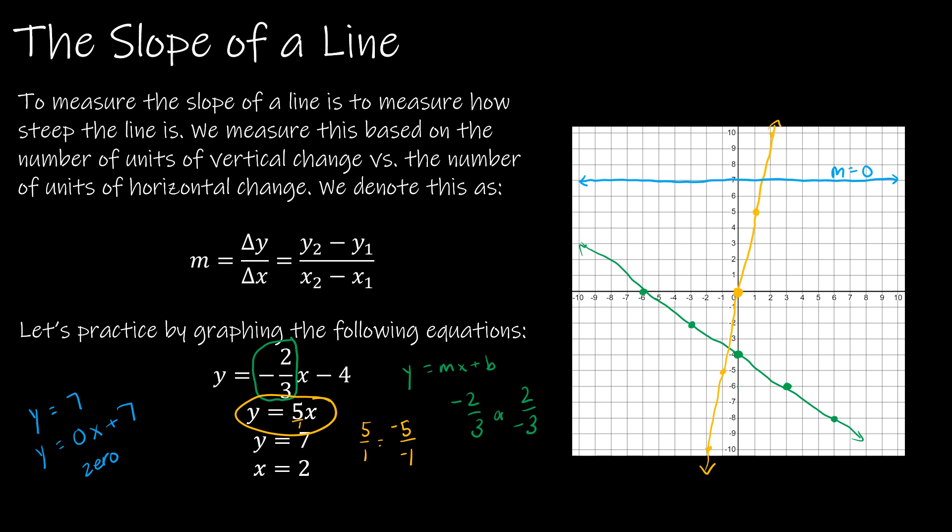That is different from a horizontal slope. x equals 2 would be this line right here. And this is not considered having a slope. It's called undefined slope. Because the change in x is going to be zero. And we know that we can't divide by zero. So that's an undefined fraction and an undefined slope.